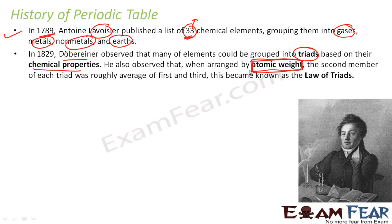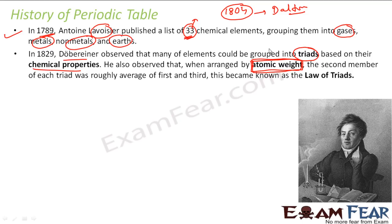Let me tell you one thing. This atomic weight concept — how it came. The concept of atomic weight came in 1804, because till 1789 the concept of atomic weight was not there. This is how this guy Dalton — John Dalton — gave his atomic theory: that everything is made of a particle called atom, which is unbreakable, and that the law of conservation of mass applies.